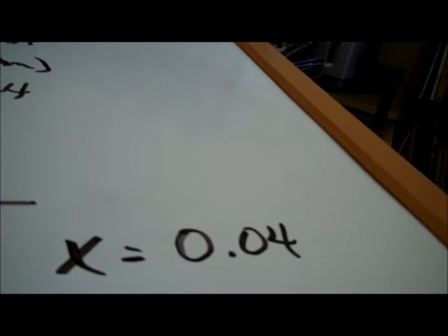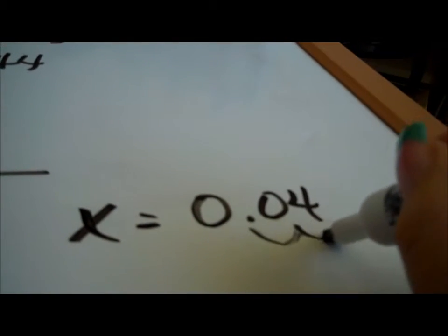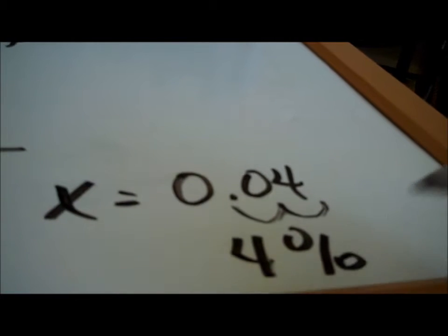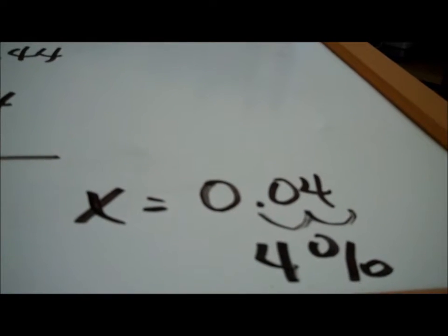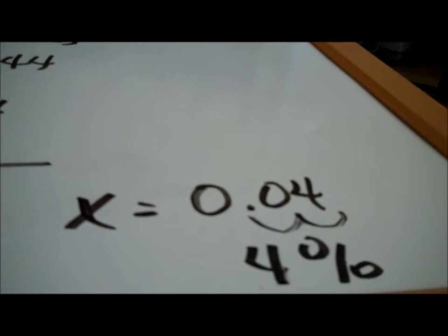Did I answer my question? It says determine the tax rate. Rate is written as a percent because this is a tax percent — tax is always given as a percent. So is 0.04 our final answer? No. We must change this decimal to a percent by moving the decimal two places to the right. So this is 4 percent, which is very low compared to our 7-point-whatever percent we have in Pueblo and Colorado Springs.